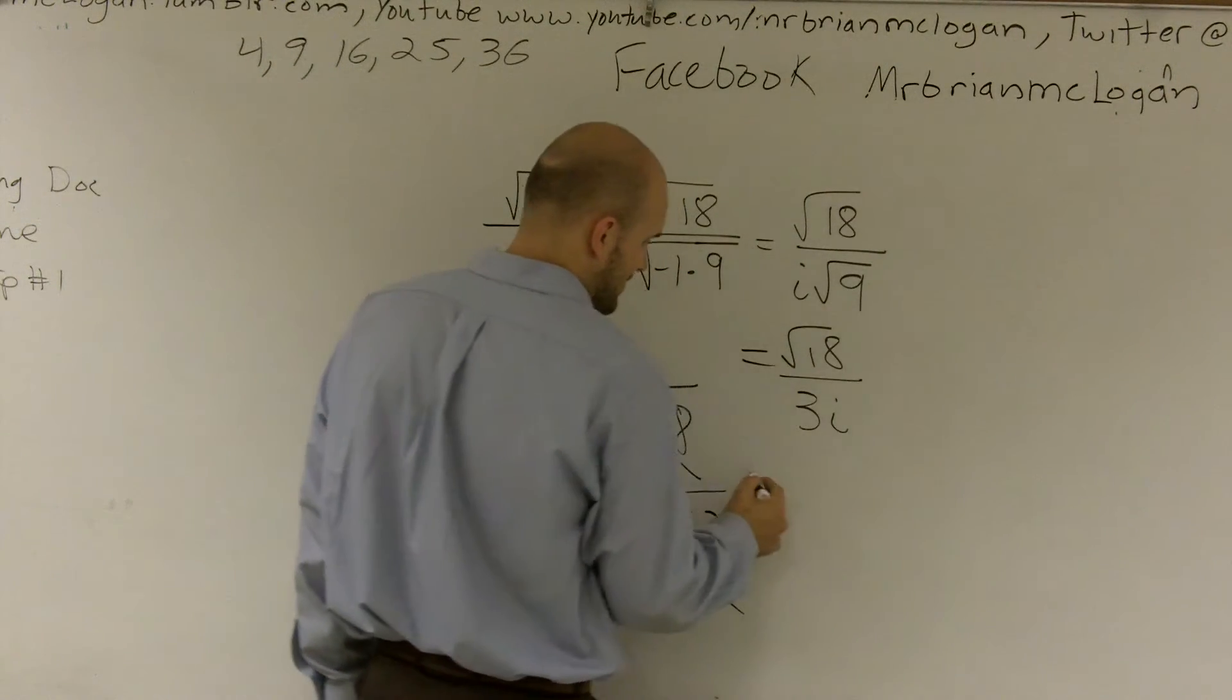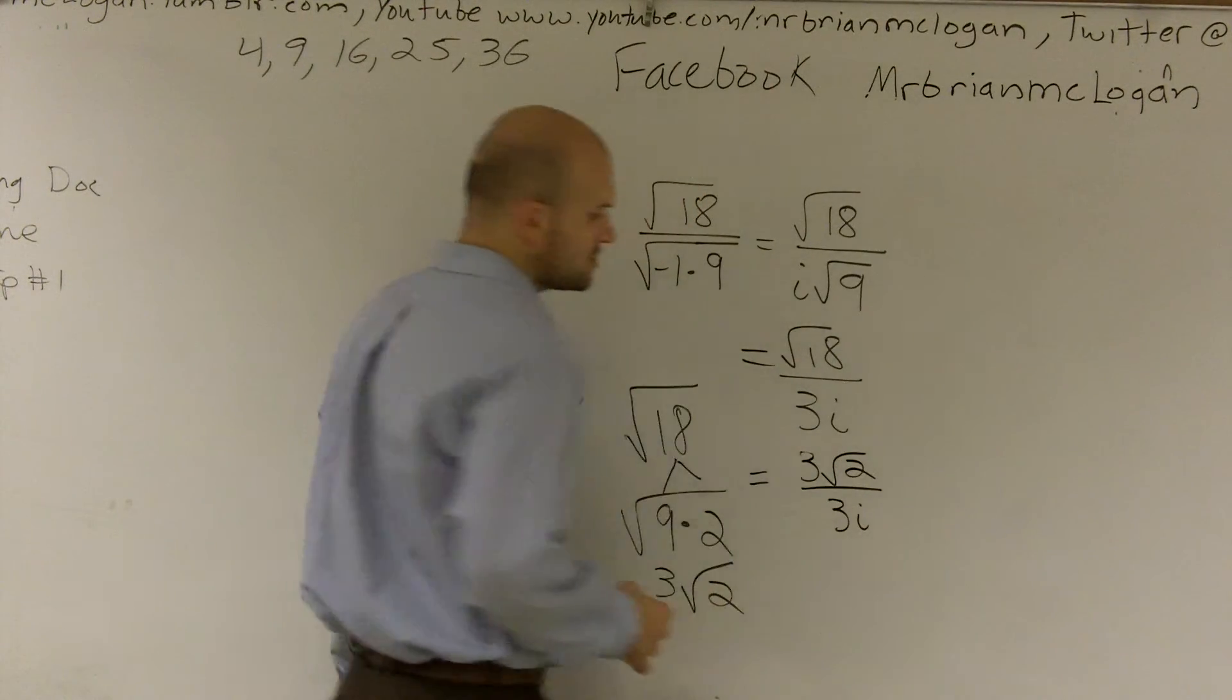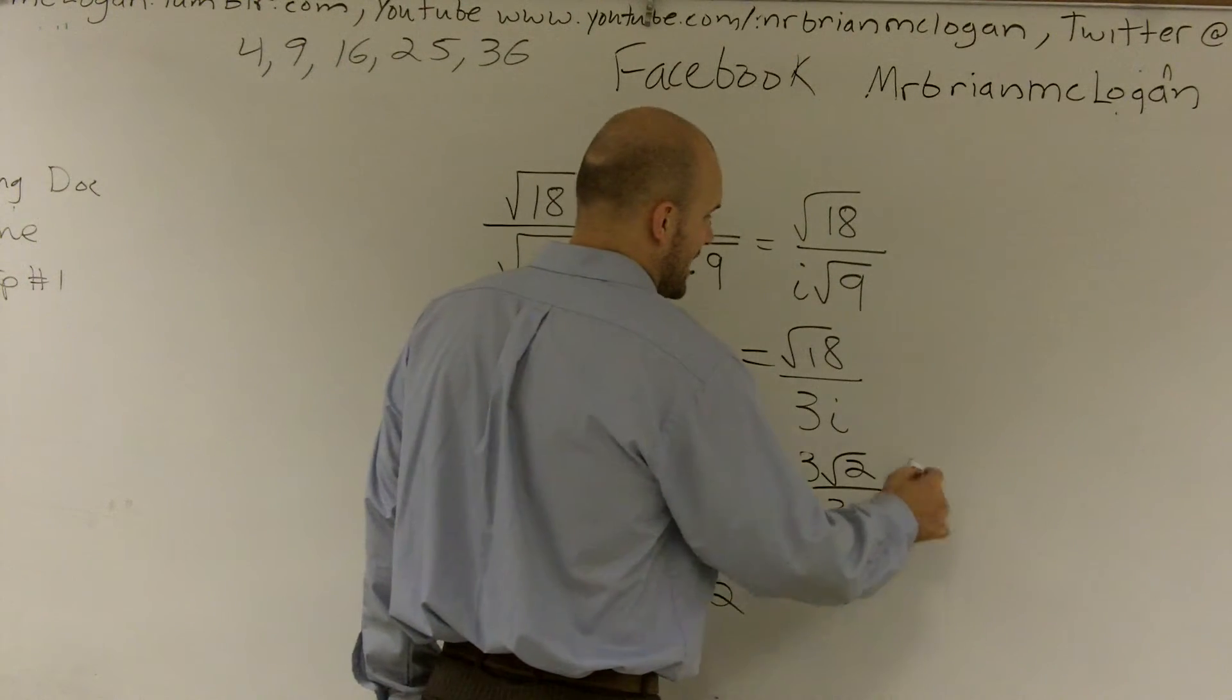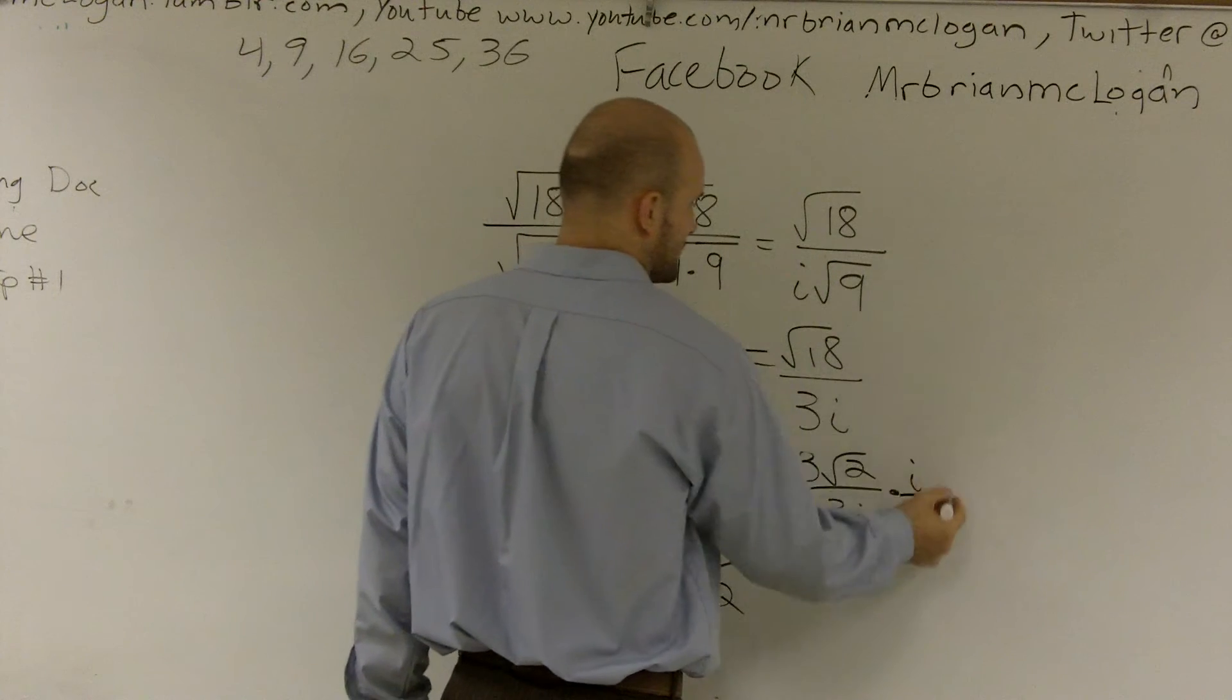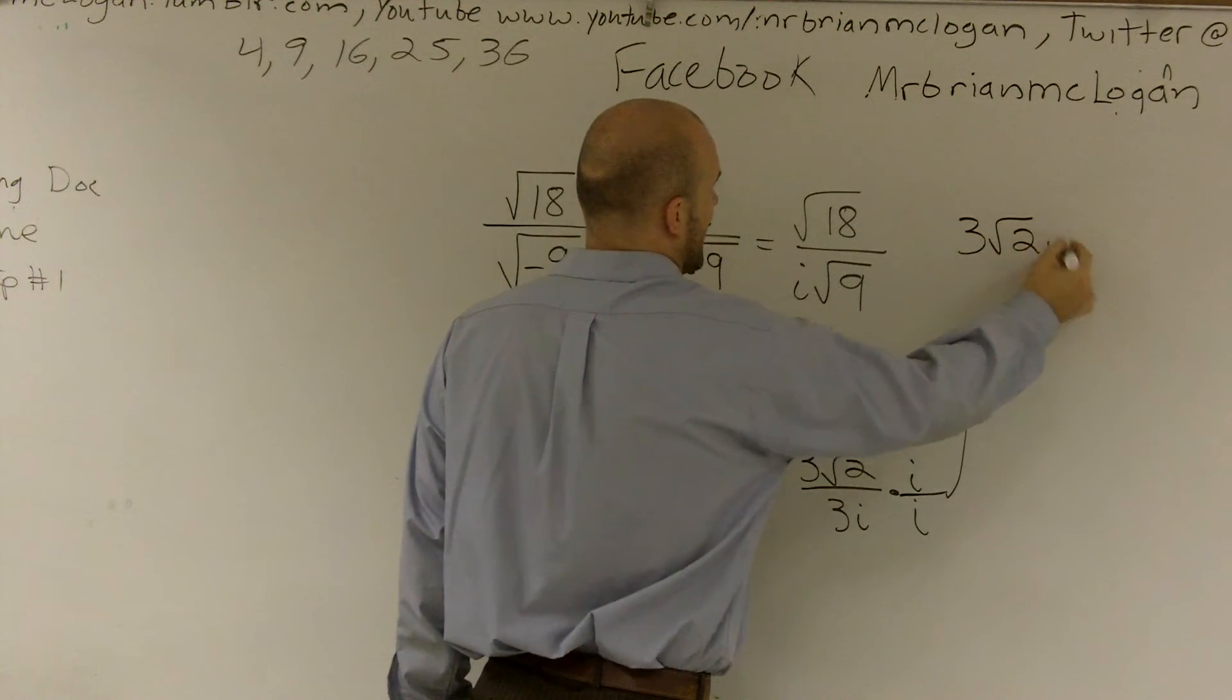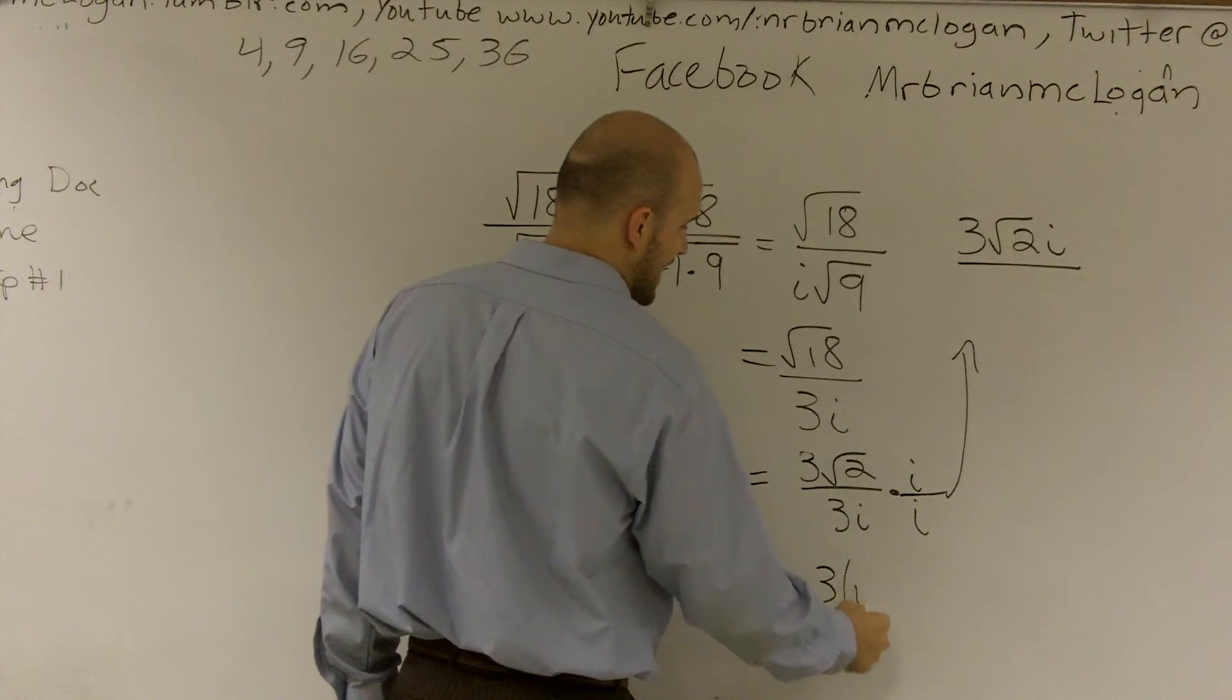And actually, let me just rewrite this as 3 radical 2 over 3i. So what I'm going to have to do is to get rid of that i, I'm going to have to multiply by i on the top and the bottom.